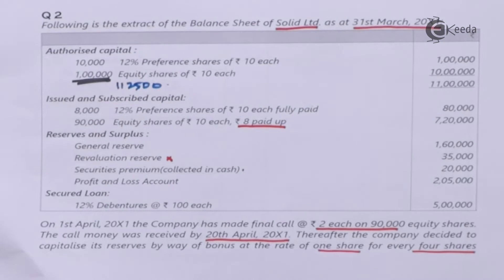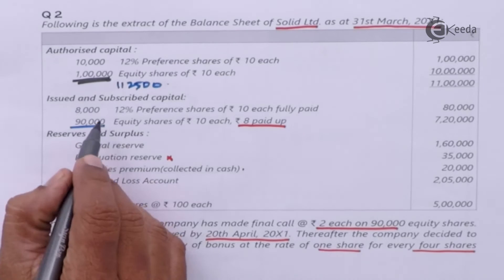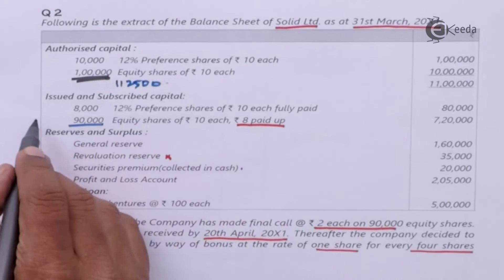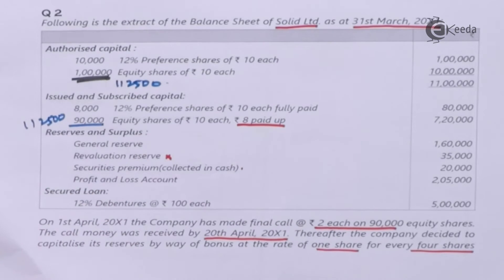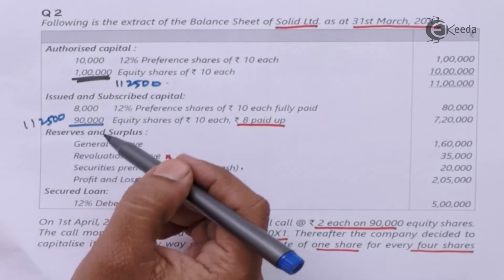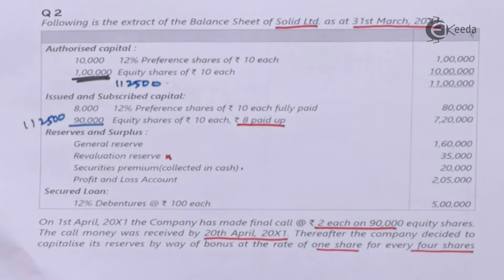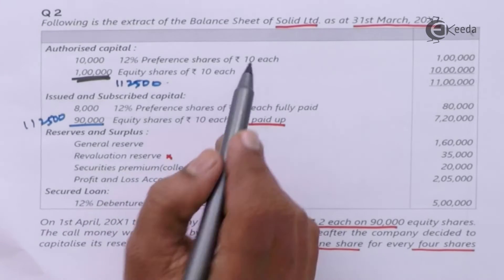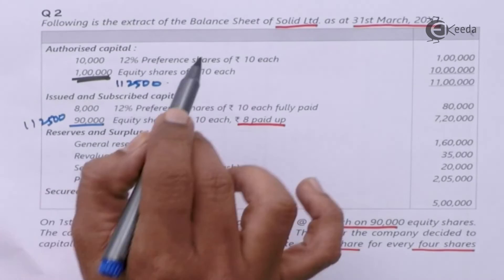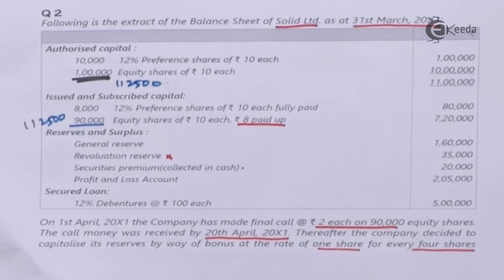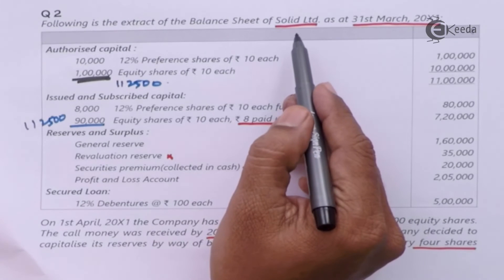My issued number of shares will increase from 90,000 to 1,12,500. Issued capital cannot be more than authorized capital — it can be at most equal to authorized capital. So our authorized equity share capital will be changed to 1,12,500 shares. Preference share capital we are keeping the same — there is no change in that. Accordingly I will now prepare the balance sheet for Solid Limited.